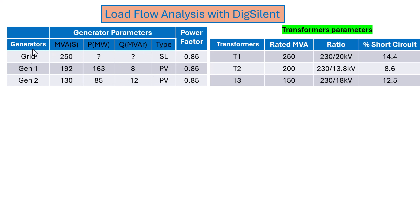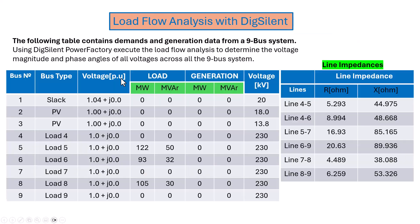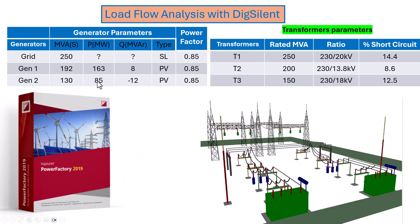If you look at this table, we've got three generators. One is the slack generator on bus one — we know its voltage is 1.04 per unit, generating at 20 kilovolts. We've also got two PV generators, and we know their capacity in terms of real and reactive power: 163 and 85. But for the slack generator, we don't know the real and reactive power that will be drawn from it, because the reference generator compensates for whatever is missing, and through that we find its real and reactive power.